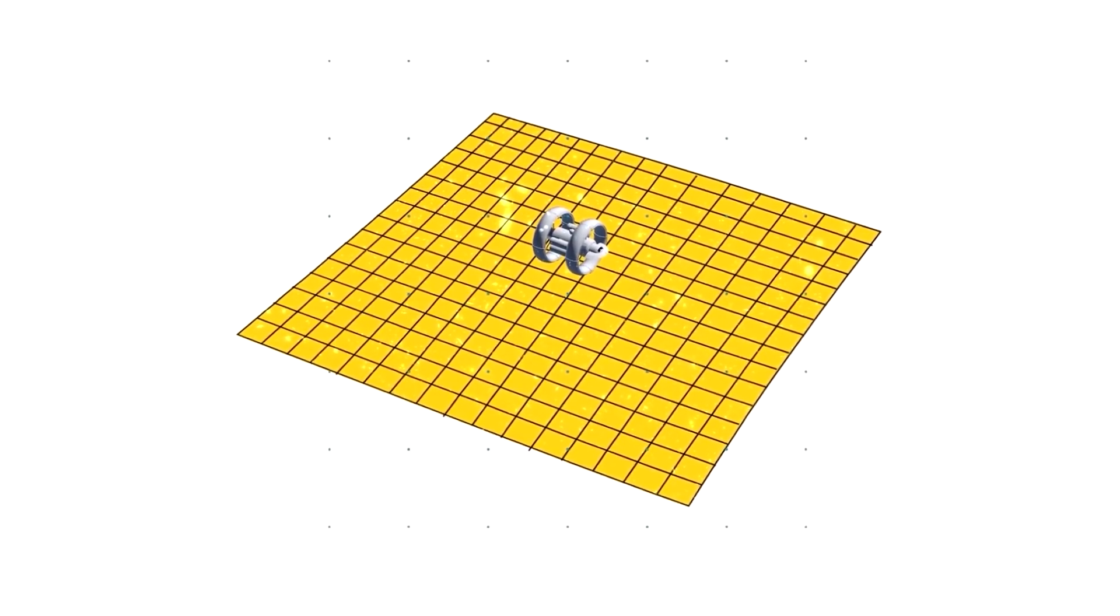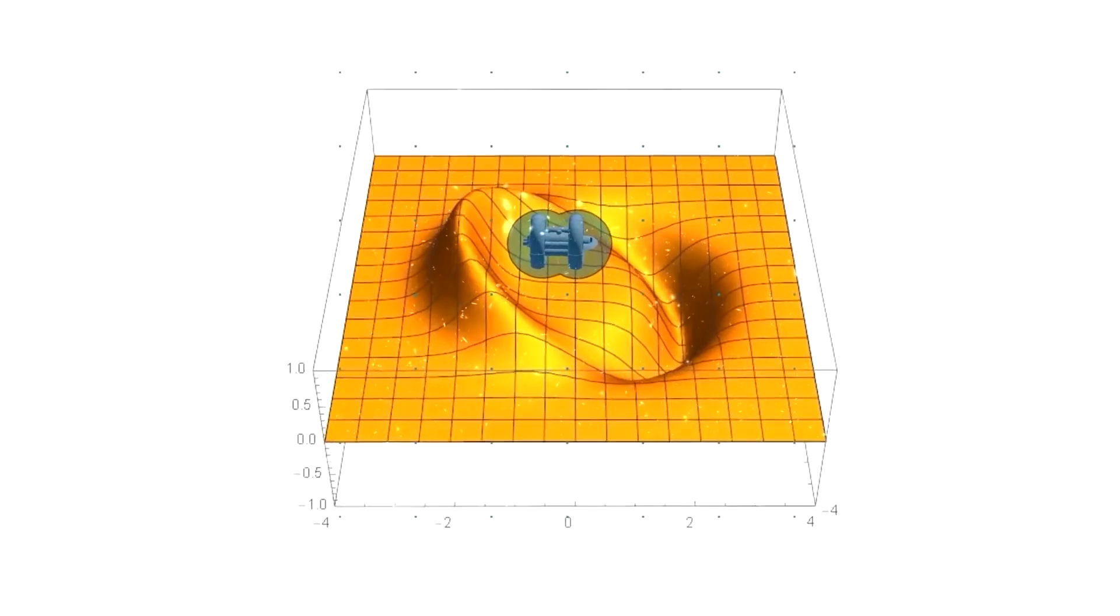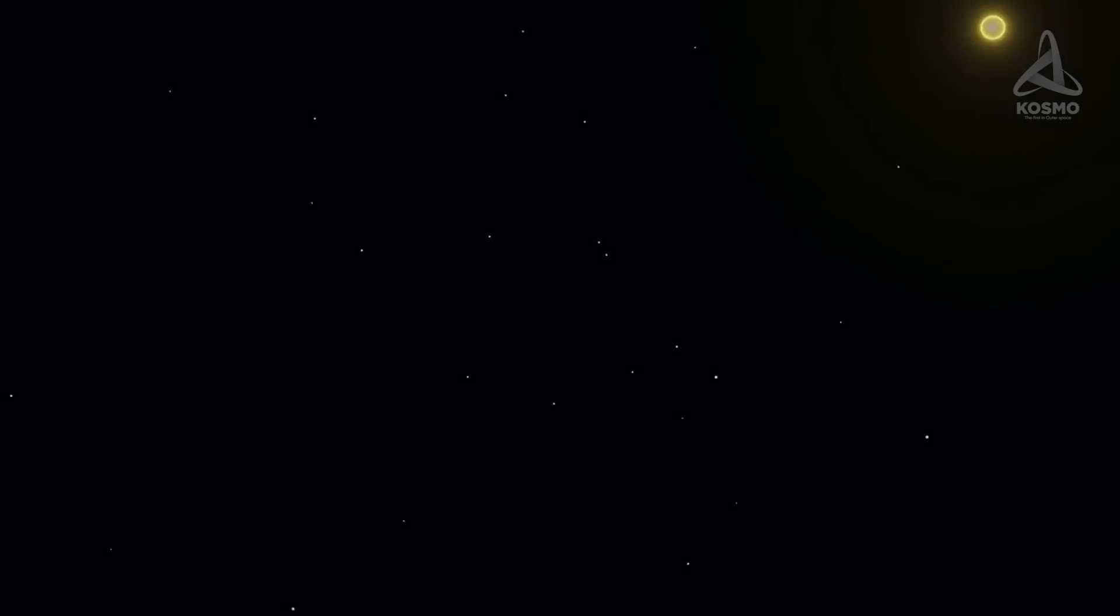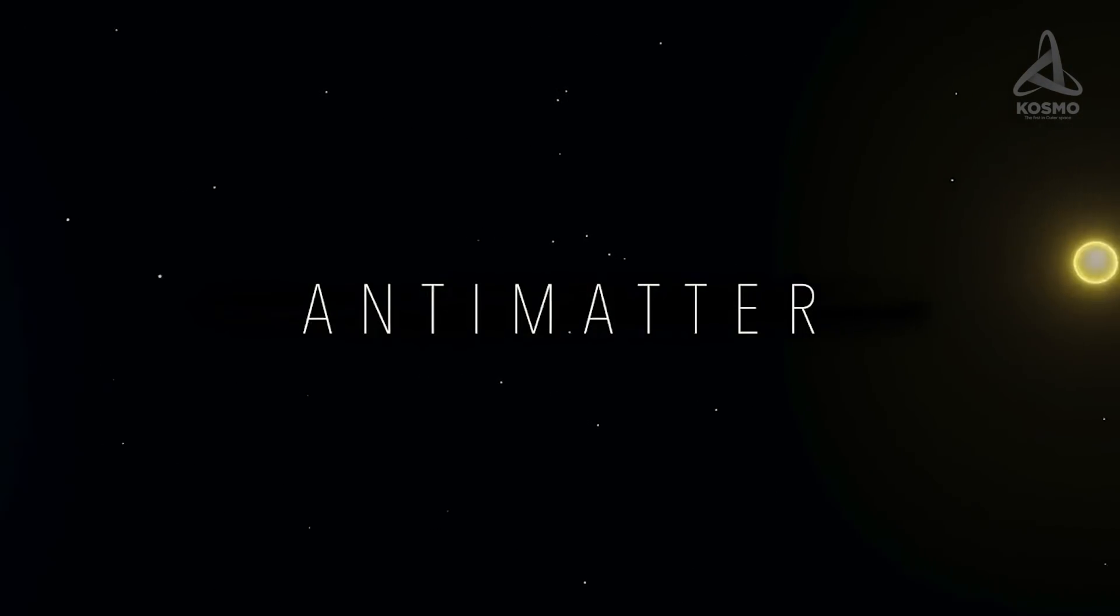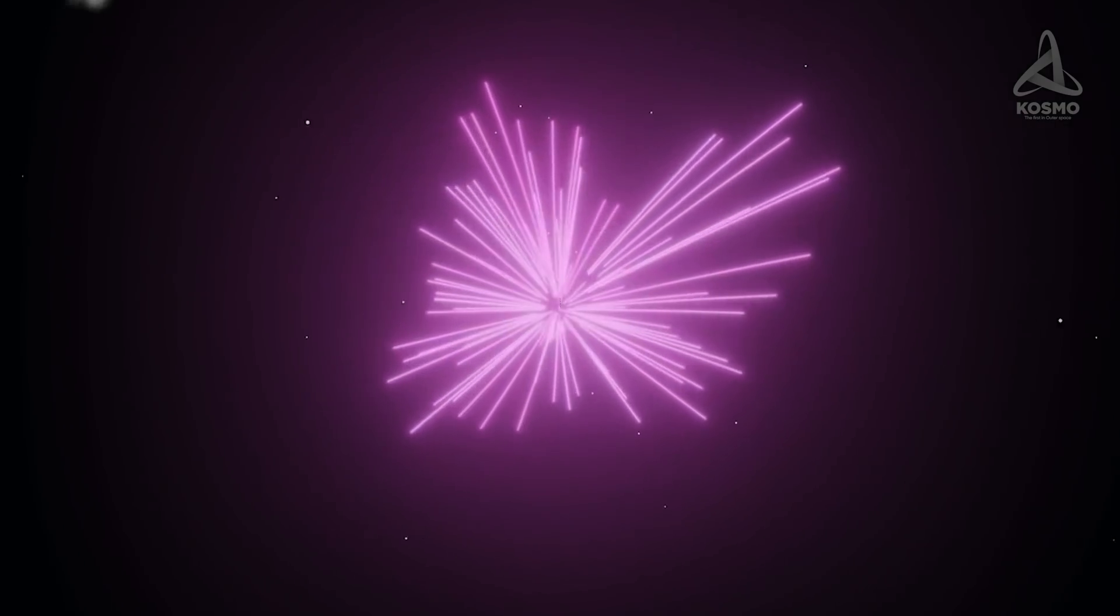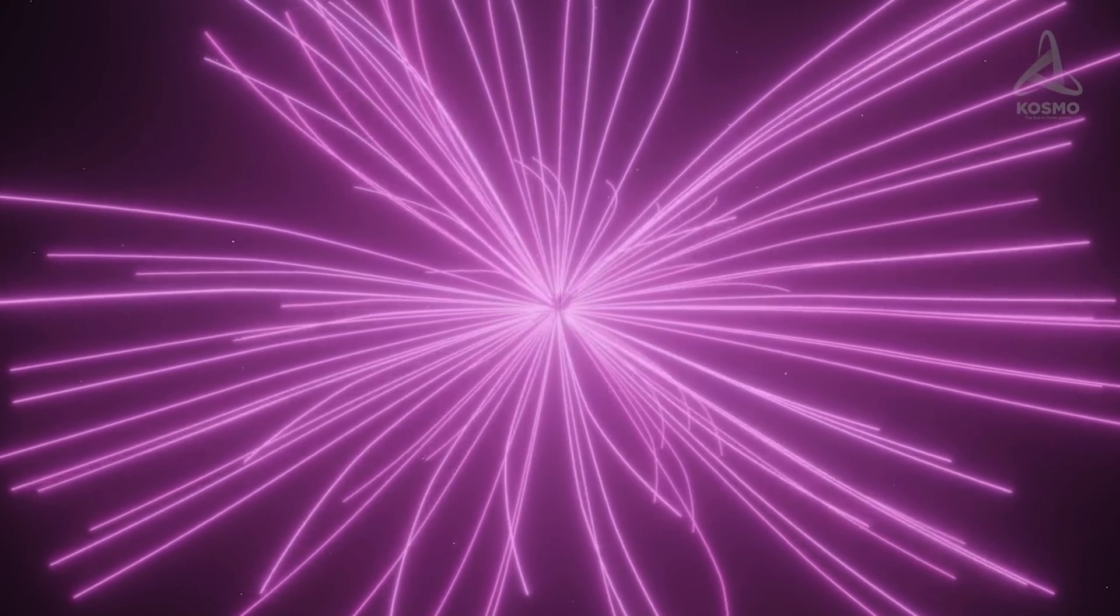According to Alcubierre's hypothesis, by using a warp drive, space could be made to contract in front of the spacecraft and expand behind it. To achieve this, the so-called exotic matter would be needed. This matter would have rather specific properties, like negative energy density. It may theoretically exist, but it hasn't been experimentally discovered yet.